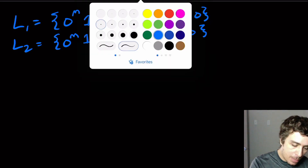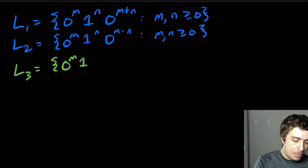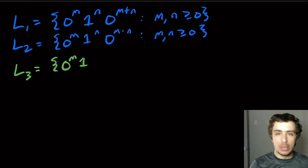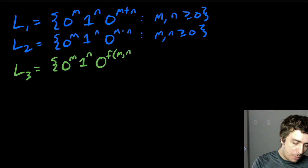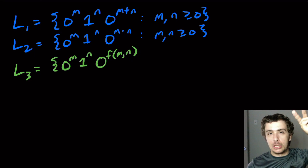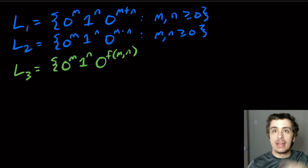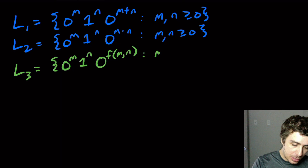I want to show that both of these are not regular. What I'm going to do is define a language L3, which generalizes both of these, and then we'll reduce back to the original two. So I'll have zero to the m, one to the n, and then zero to the F of m and n — some function of m and n. The first example is where F is just addition and the second language is where F is multiplication.